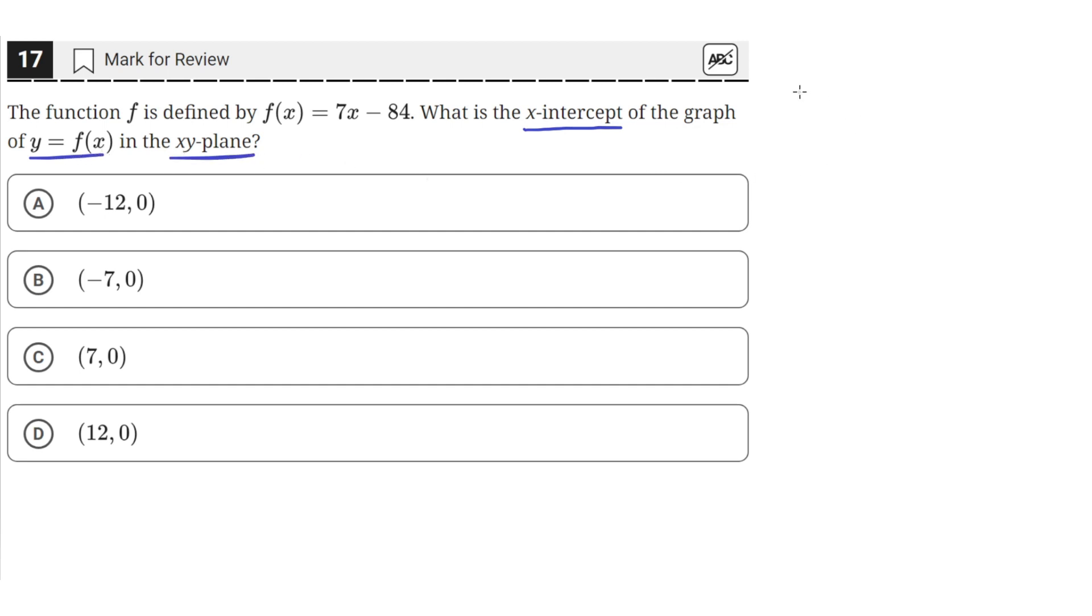Okay, so we have this. Let's draw a quick little graph of what this function looks like. So this is our xy-plane, and this function is a line with a positive slope and a y-intercept of negative 84.